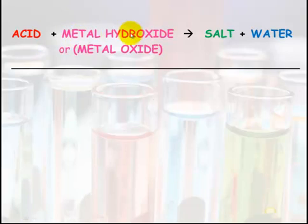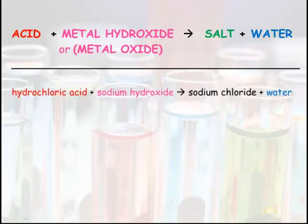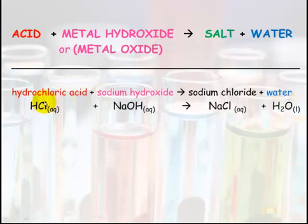An acid plus a metal hydroxide or a metal oxide will make salt and water. An example: hydrochloric acid plus sodium hydroxide makes sodium chloride plus water.